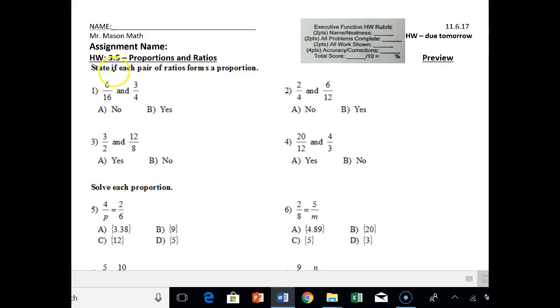So the first is saying state if each pair of ratios forms a proportion. Remember this is only true if both ratios are the same. So there's a couple ways we can do this. We could either simplify both ratios and see if they're equal or we could cross multiply and see if their products are equal.